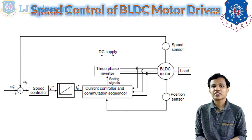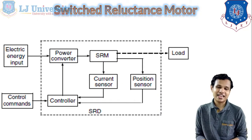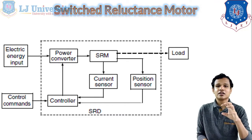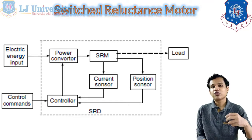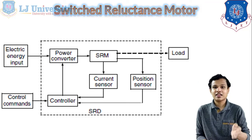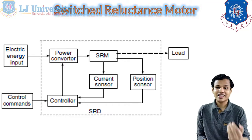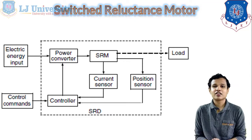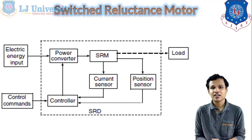Next is the switched reluctance motor, also known as the SR motor. In its arrangement, the electric energy input is supplied to a power converter, which is connected to the SRM, and the SRM is connected to the load. The SRM also requires a current sensor and position sensor connected to a controller, and the controller receives commands from the controlling or management system.